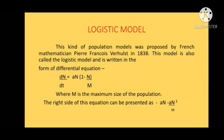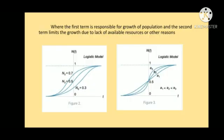The right side of this equation can be represented as aN - aN²/M. Where the first term is responsible for growth of population and the second term limits this growth due to lack of available resources or other reasons.